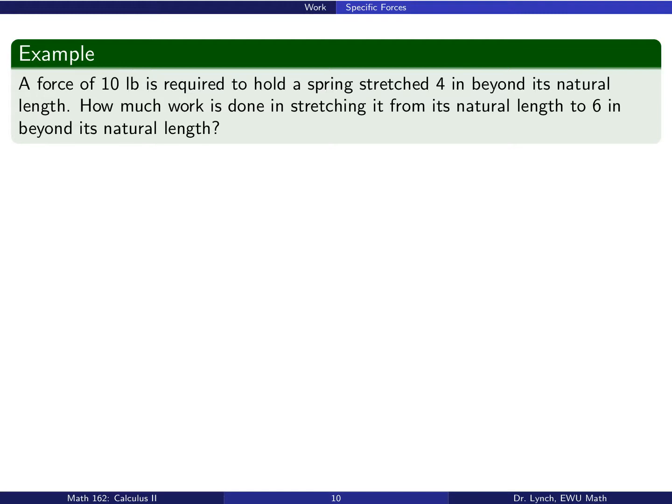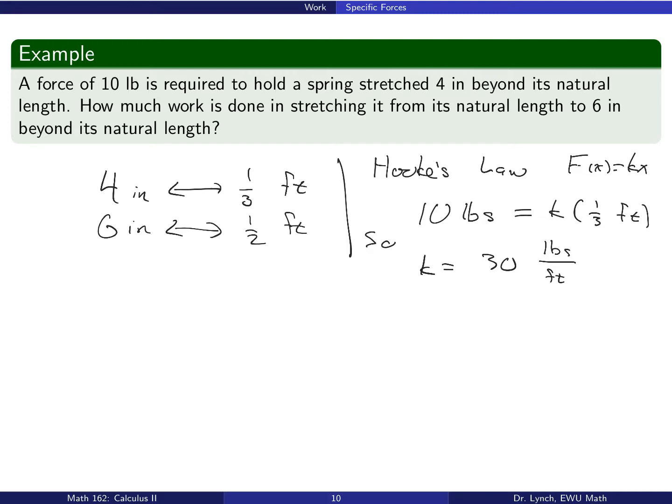Okay, here's an example. A force of 10 pounds is required to hold a spring stretched 4 inches beyond its natural length. How much work is done in stretching it from its natural length to 6 inches beyond its natural length? First things first here, we'll have to think in terms of feet instead of inches. Of course, 4 inches is 1 third of a foot, 6 inches is 1 half a foot, and we're told that 10 pounds is required to stretch a spring 4 inches beyond its natural length. This gives us the spring constant, k equals 30 pounds per foot.